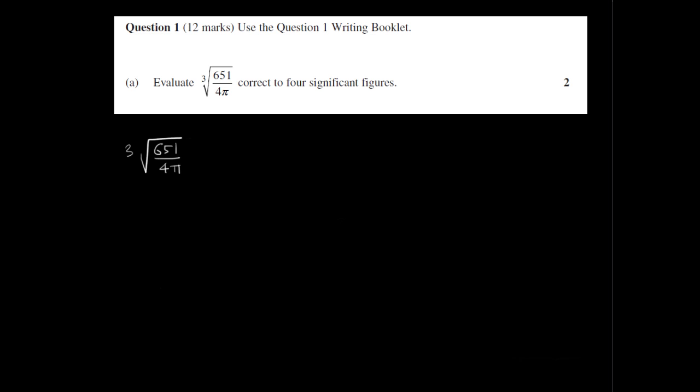So this is really a matter of using our calculator. We will have to do the inside of the cube root first on our calculator, so I'll do this on the side here. 651 on 4 pi. Plug that into the calculator and we should get this answer 51.8049 and the number keeps going. Obviously this isn't the answer. We need to cube root this answer. The cube root of 51.8049 etc. If you put that into the calculator then you should get 3.72783 and the number keeps going.